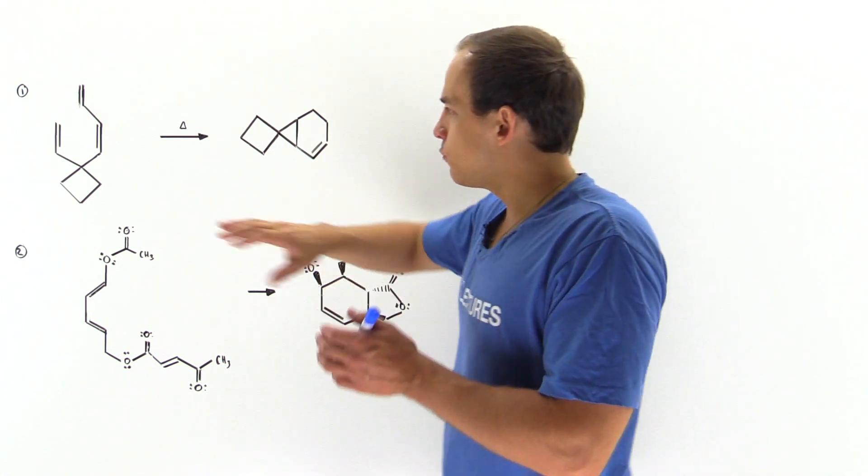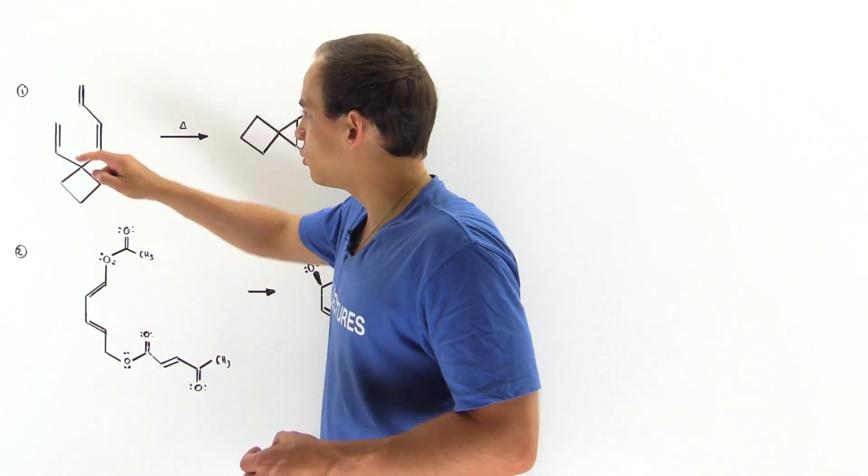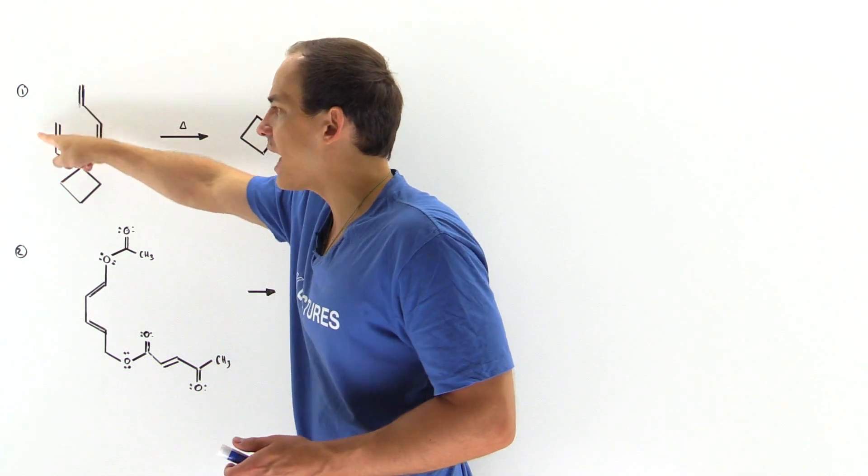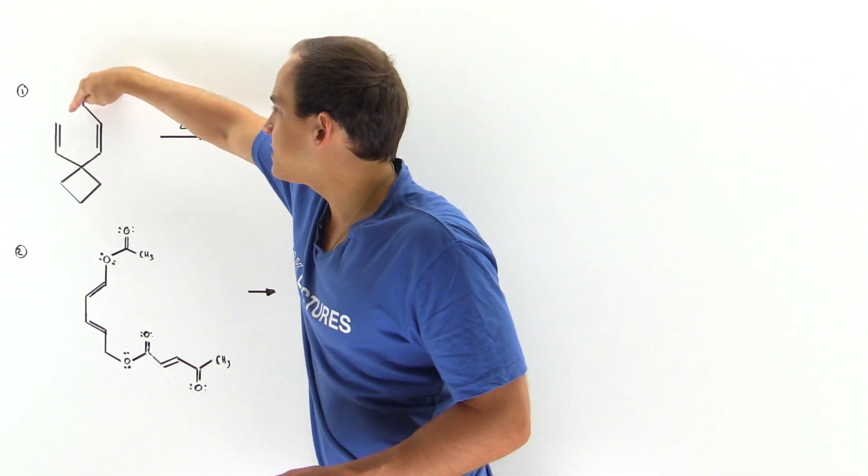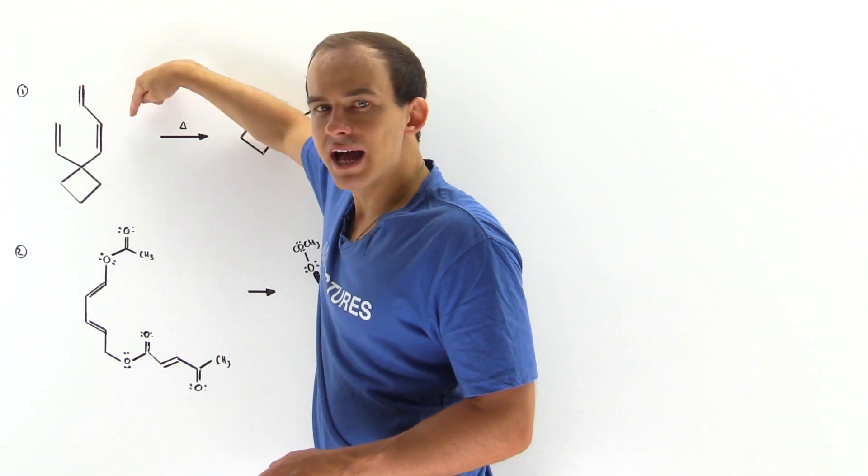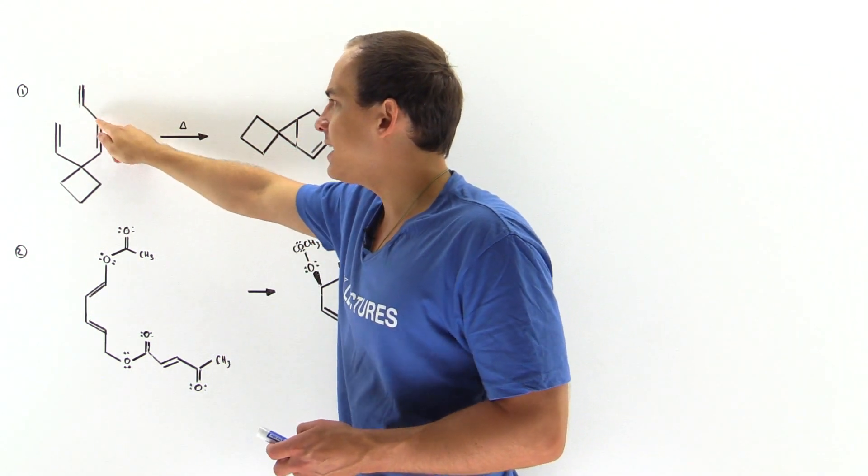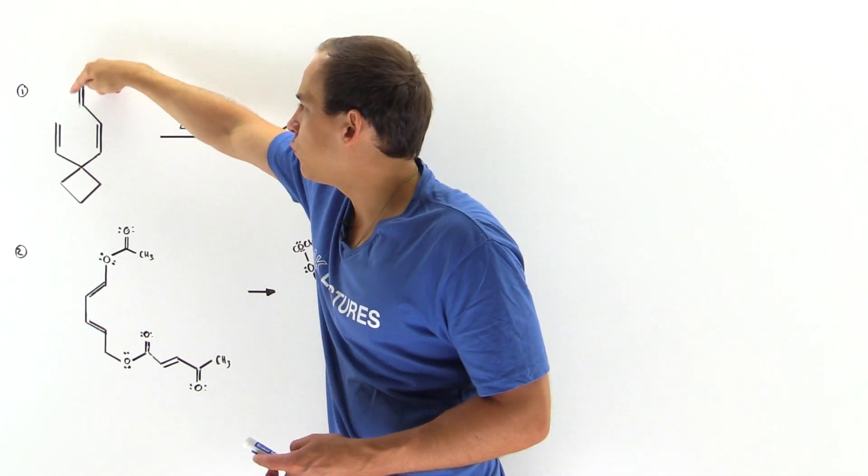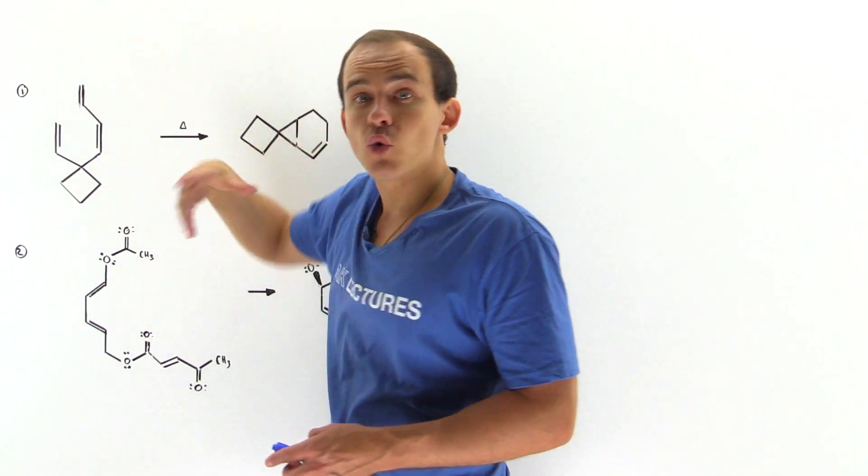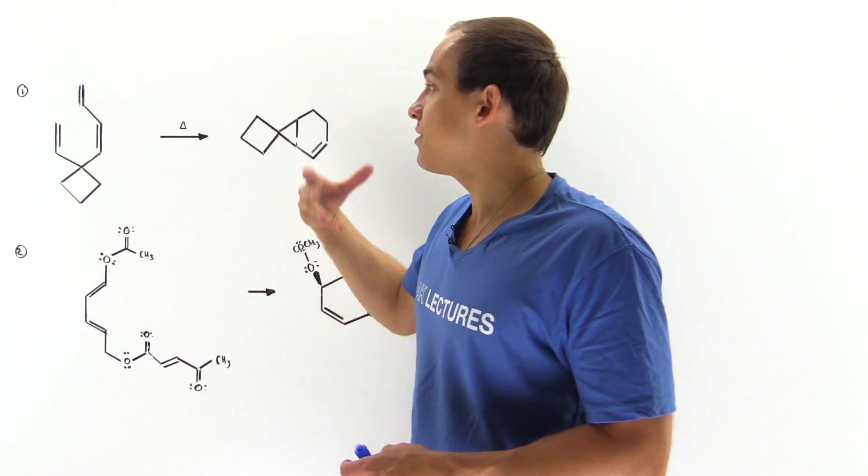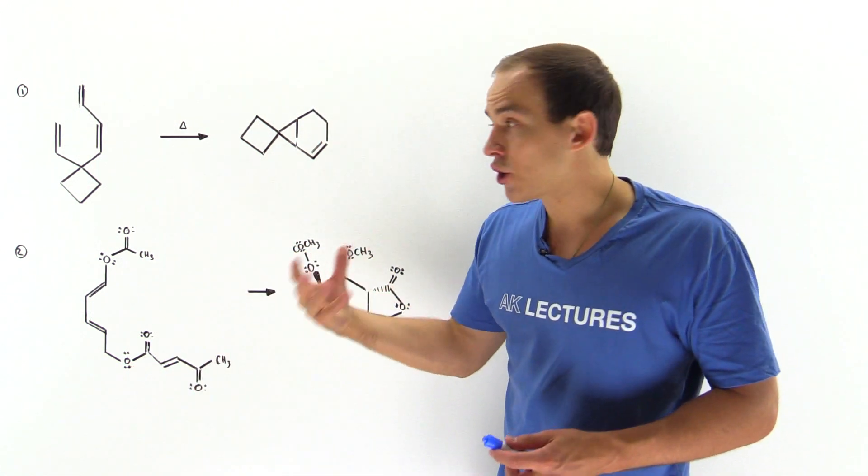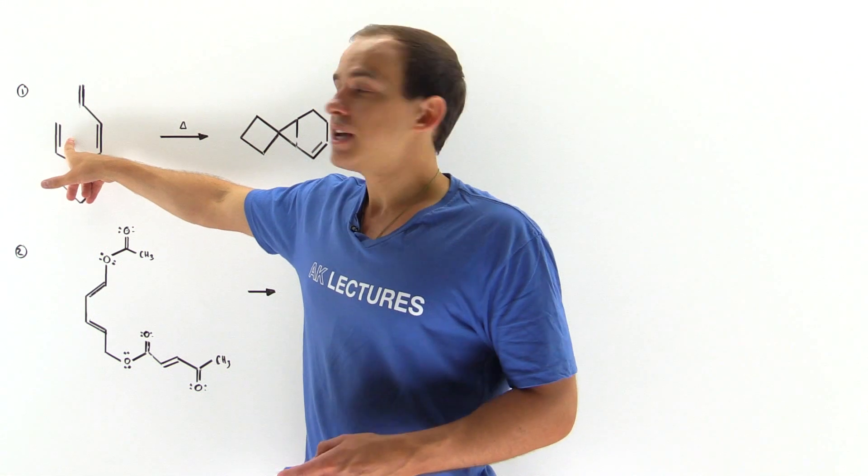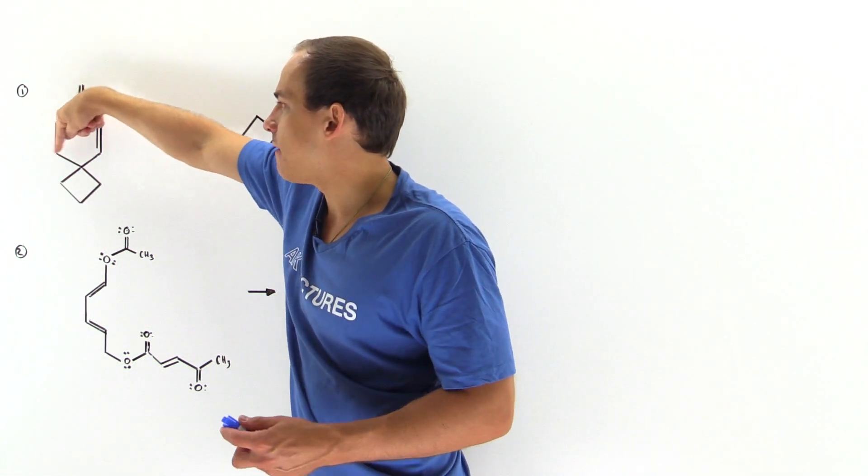If we look at the following molecule, we have this pi bond that acts as our dienophile and this is our 1,3-diene. This bond here rotates to form a cis-1,3-diene, and then that cis-1,3-diene interacts internally with this simple alkene, this dienophile.